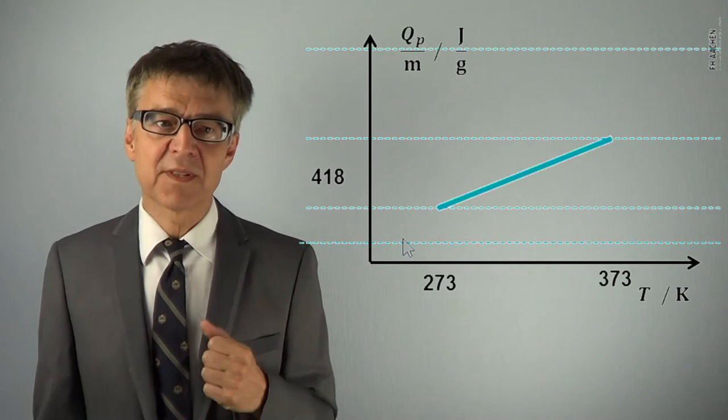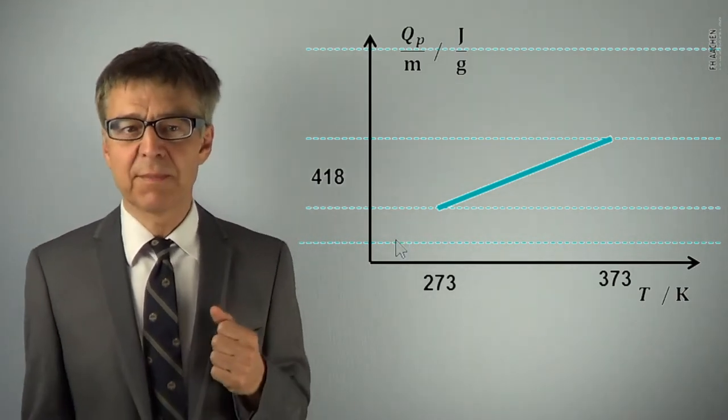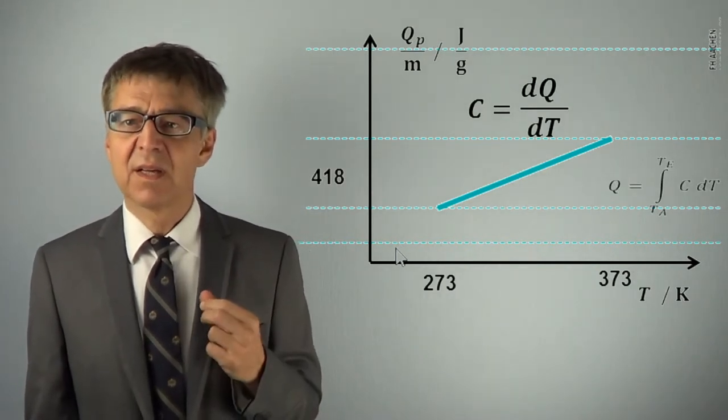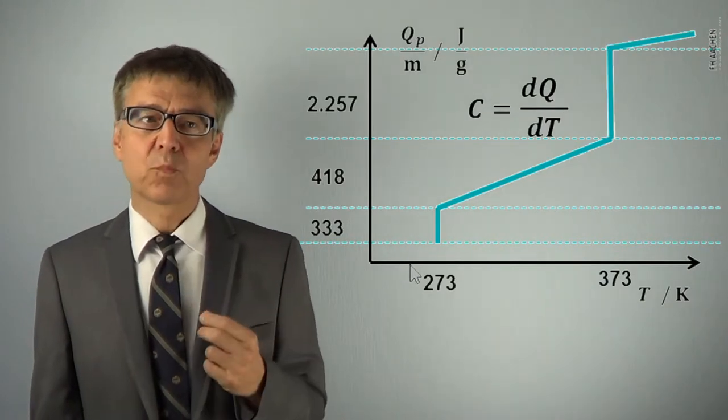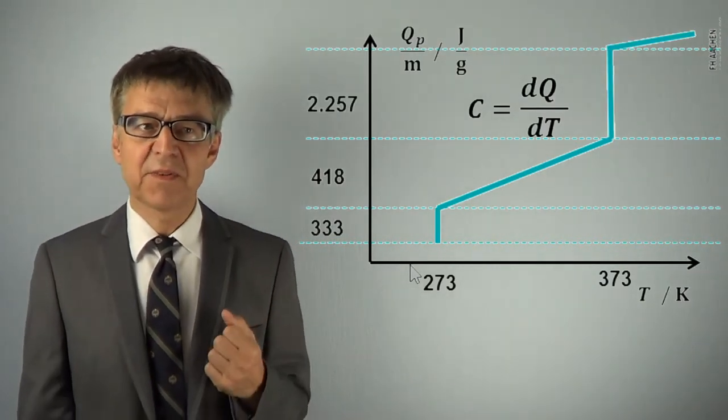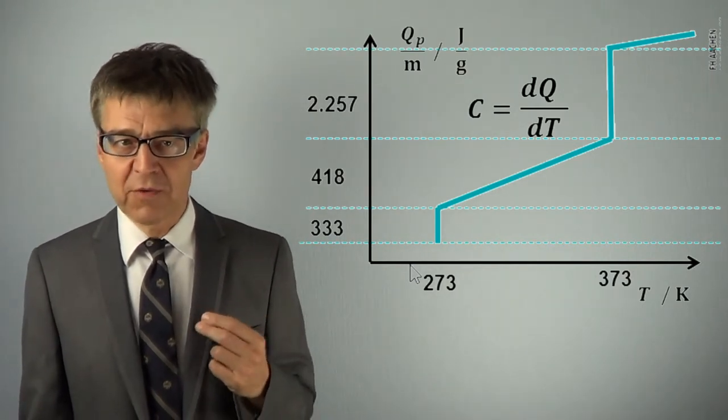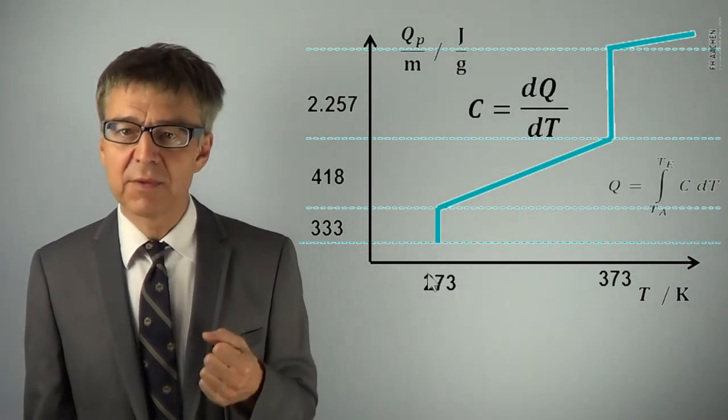As the slope of this curve is the heat capacity, conversely, heat may be calculated by integrating heat capacity C times dT. In this way, sensitive heat is often calculated from temperature changes. If I know the initial temperature, the final temperature, I simply have to integrate.